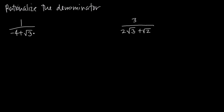What we do is we multiply by what's called the conjugate. The conjugate is going to be the same two terms, but with a different sign in between. So because we have a positive sign here, the conjugate of negative 4 plus square root of 3 is going to be negative 4 minus square root of 3.